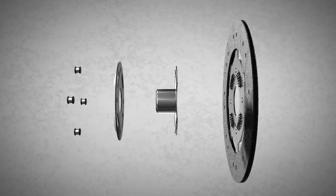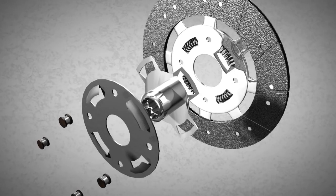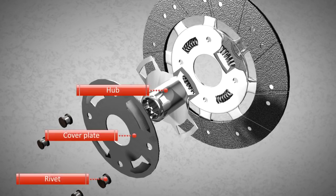The clutch disc is made of several components, of which the important ones are the hub, which is riveted to the disc with a cover plate, and the friction material installed on both sides.